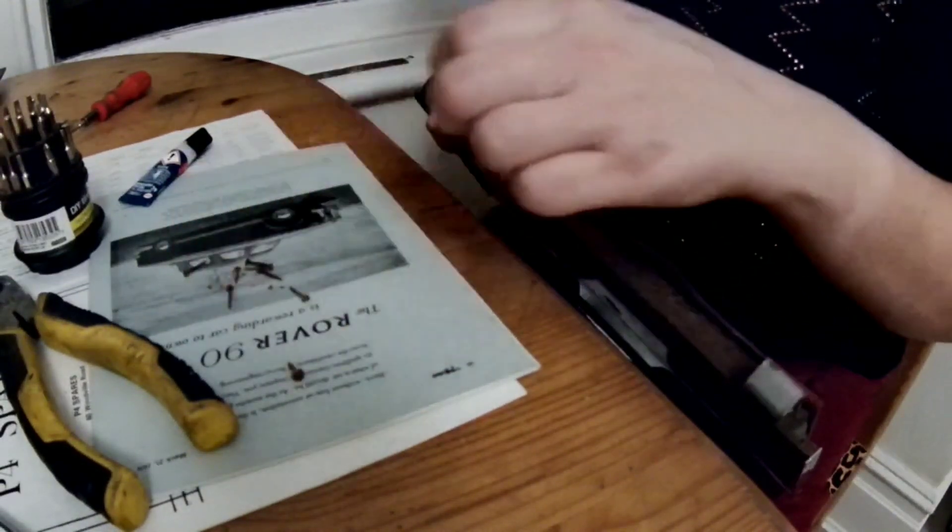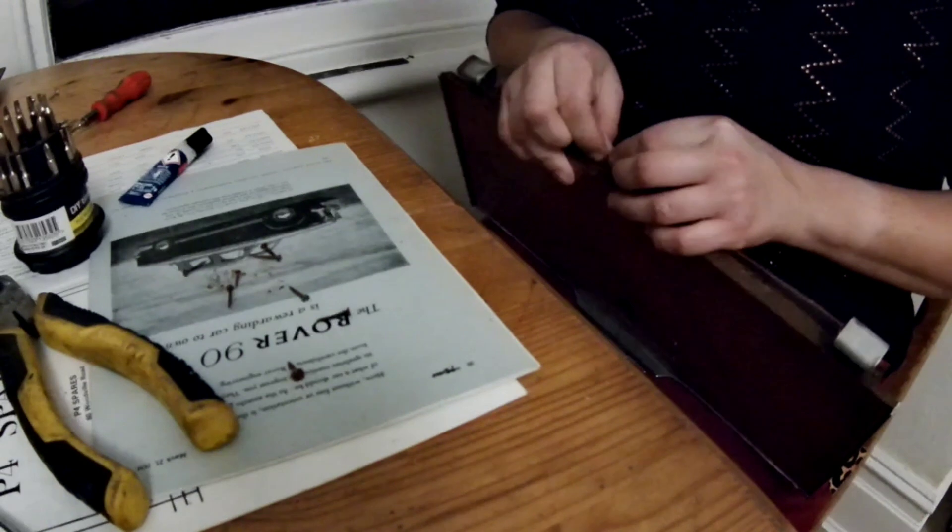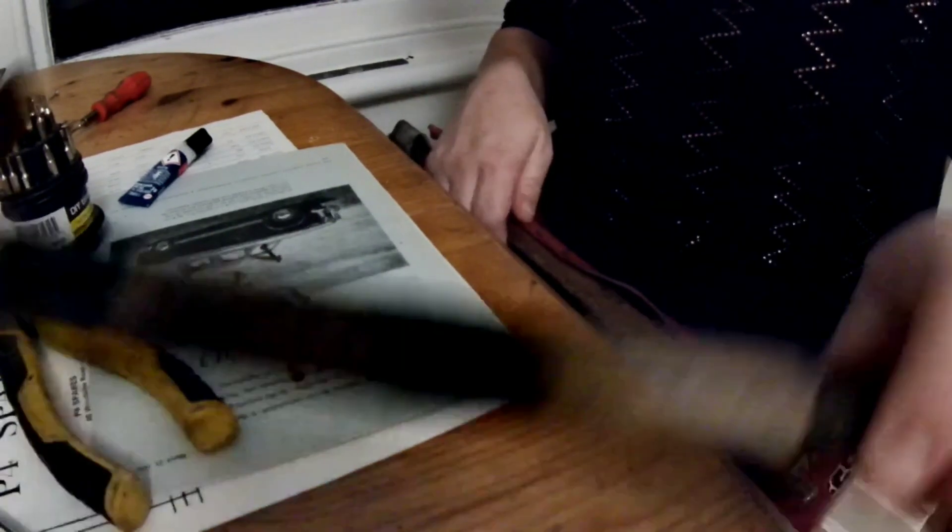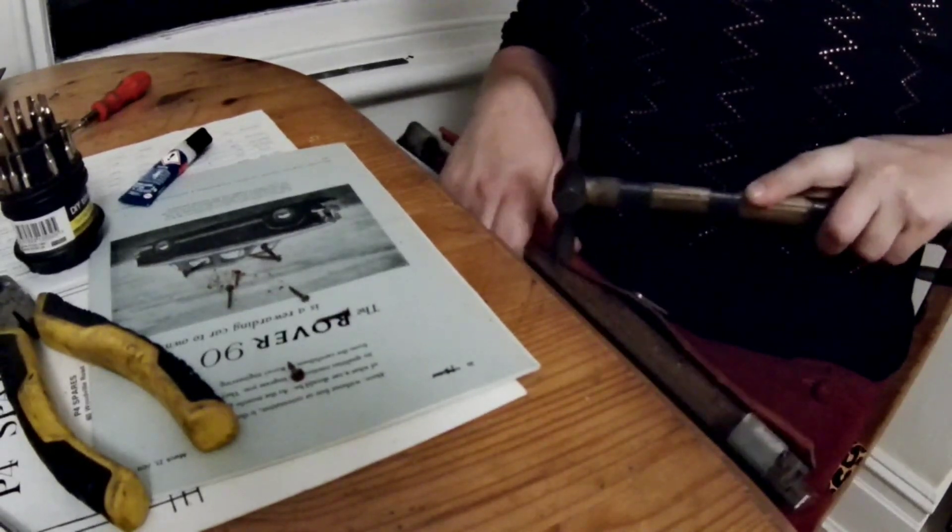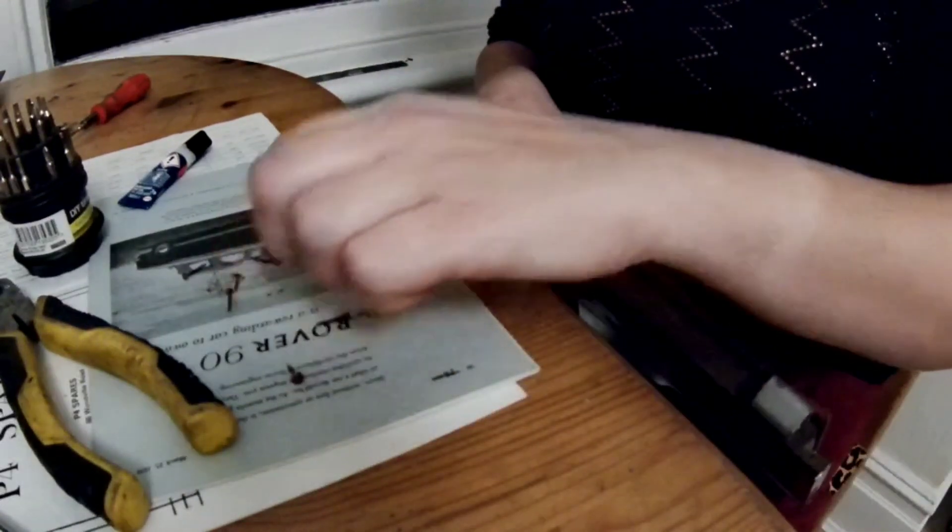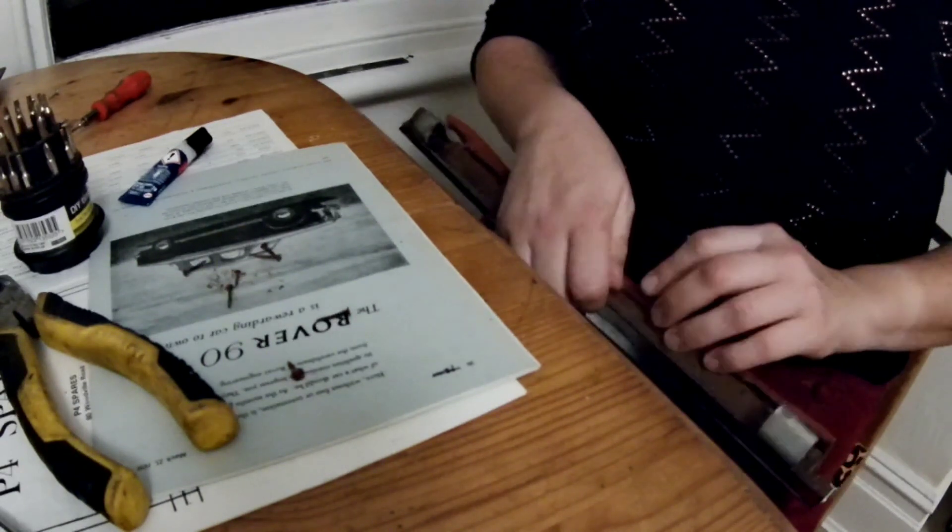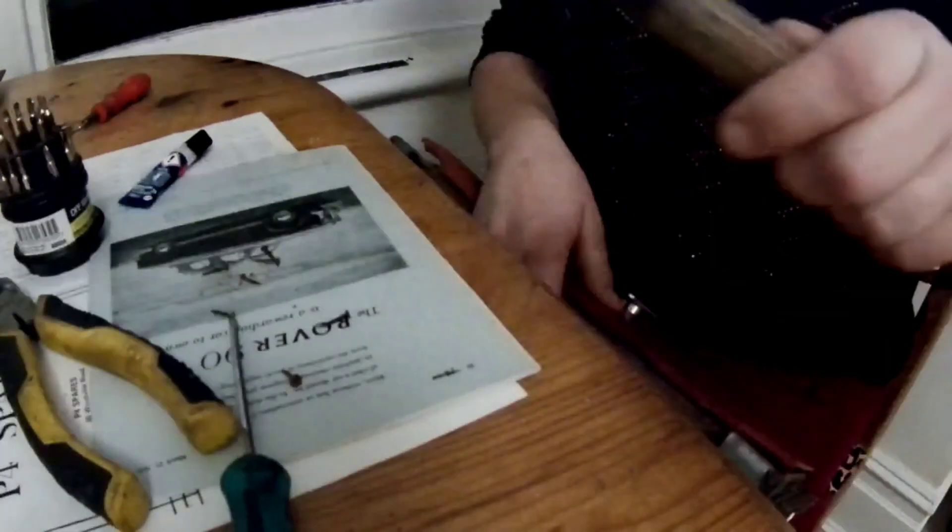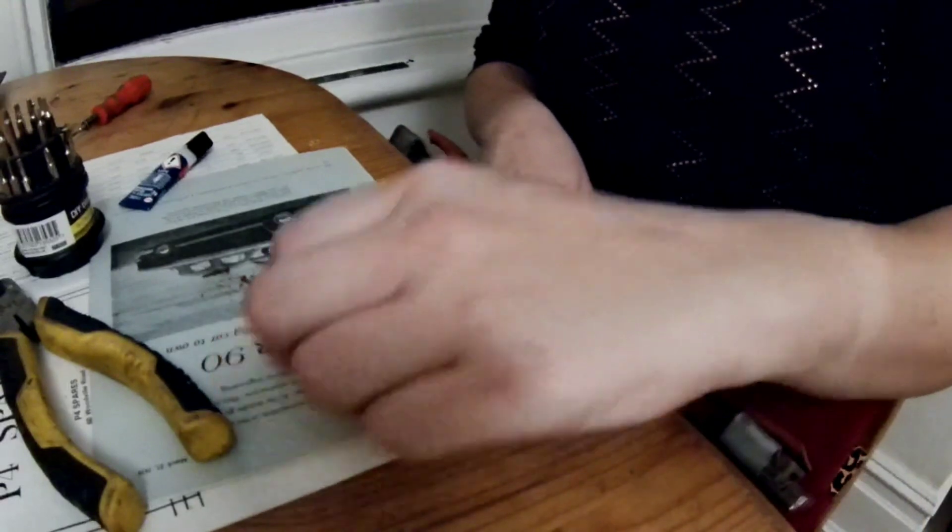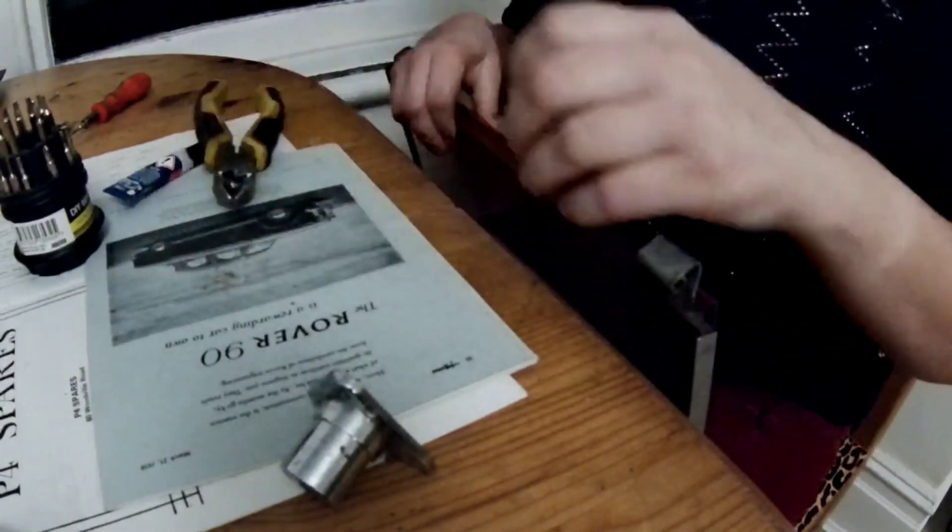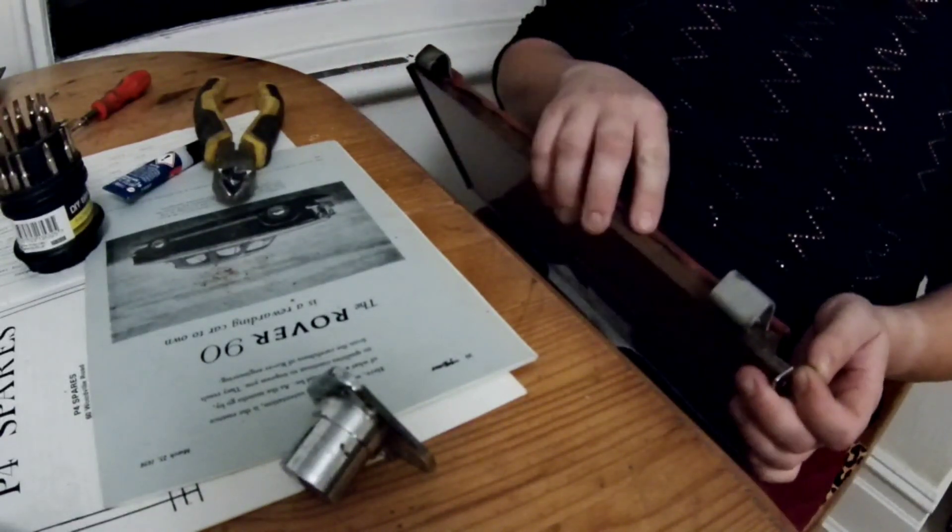Now it's time to tack down the bottom of the glove box. These aren't visible when it's fitted in the car at all. So many tacks.